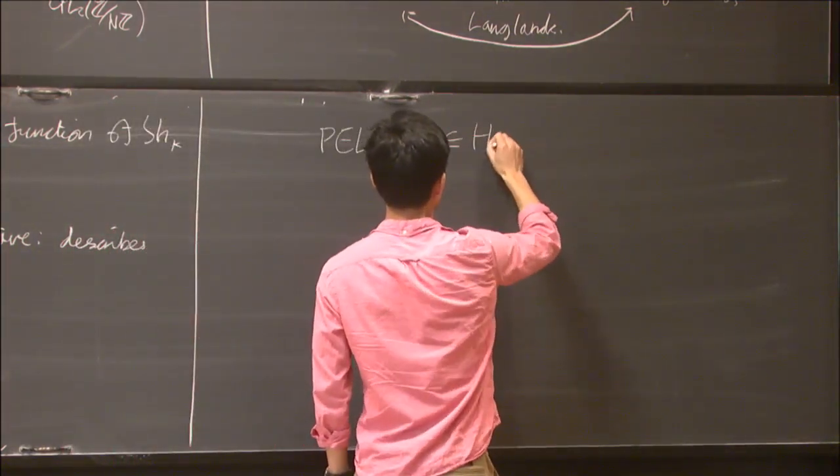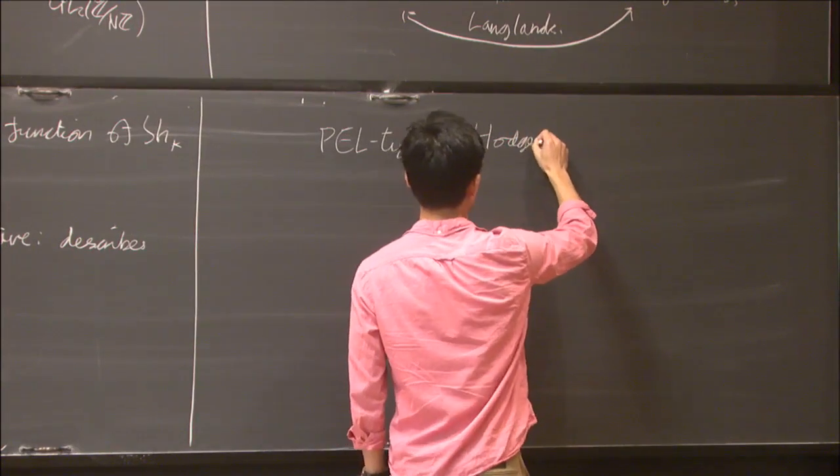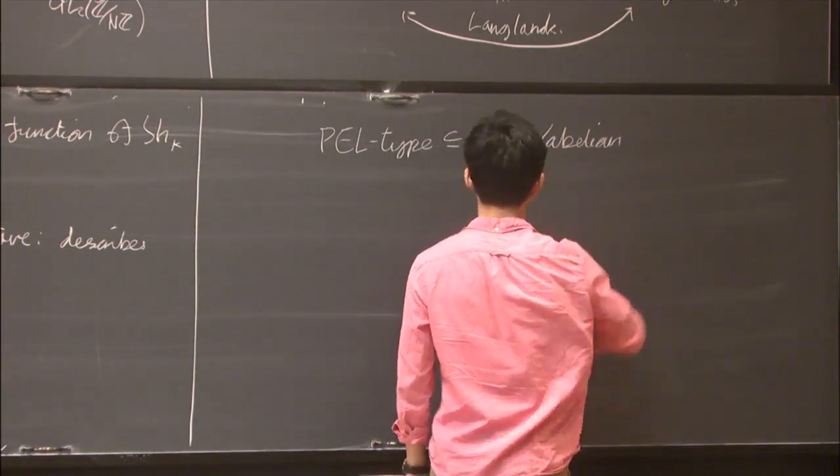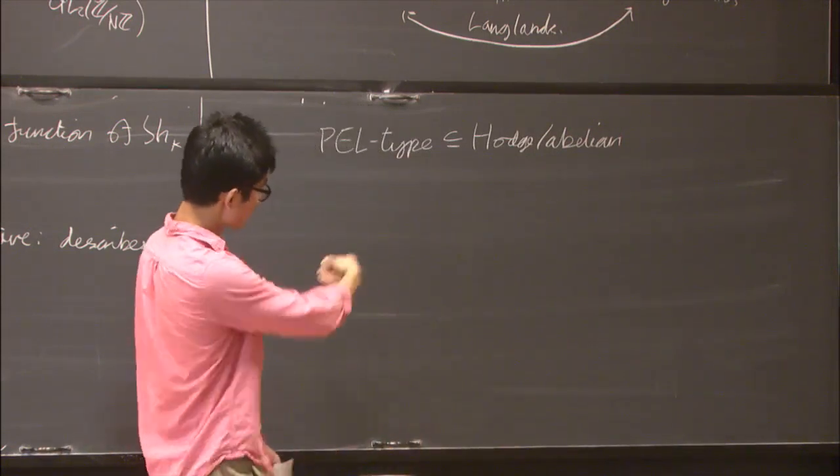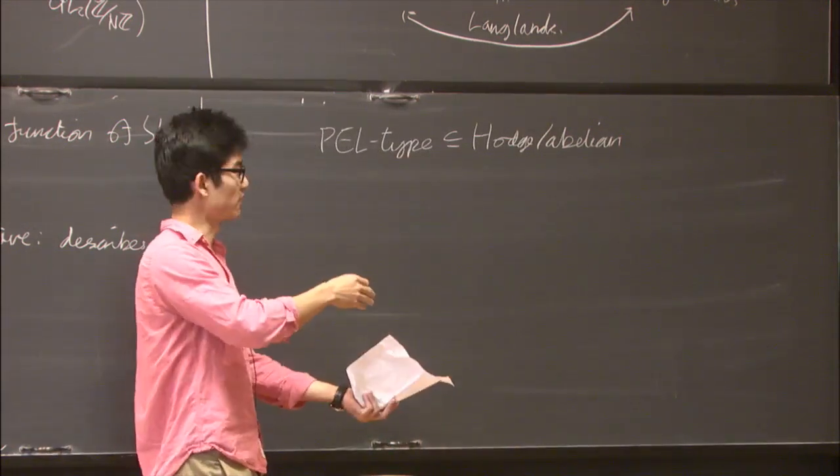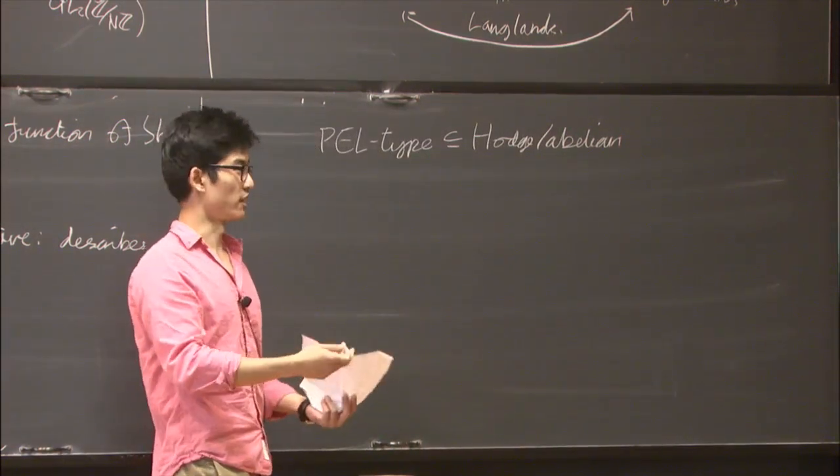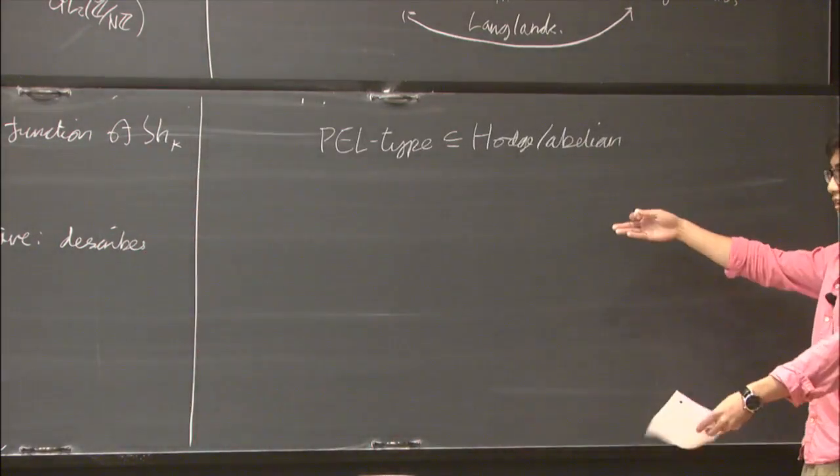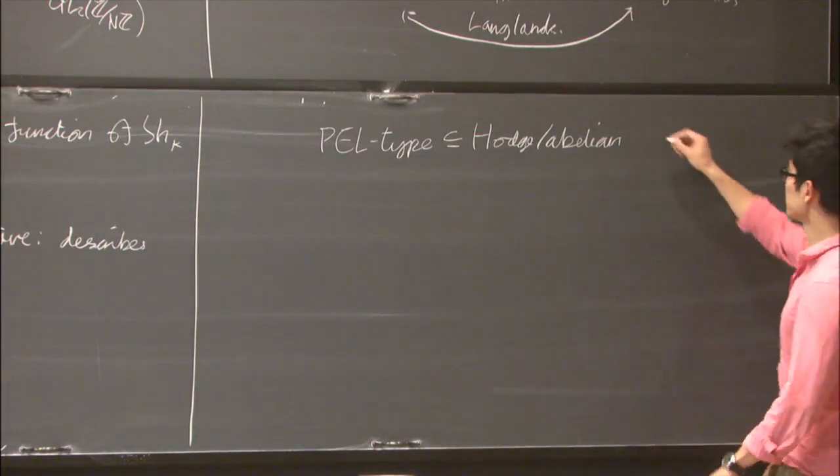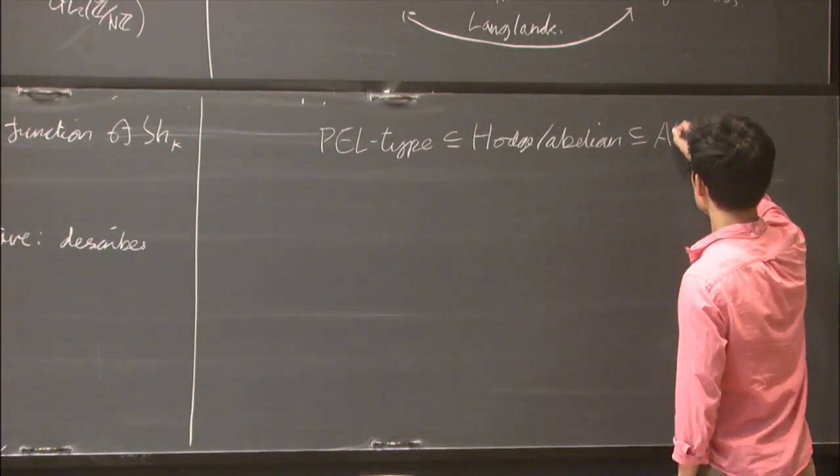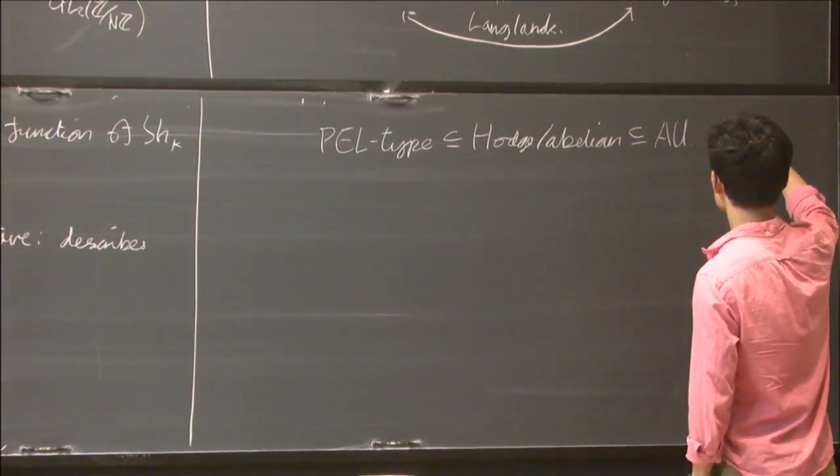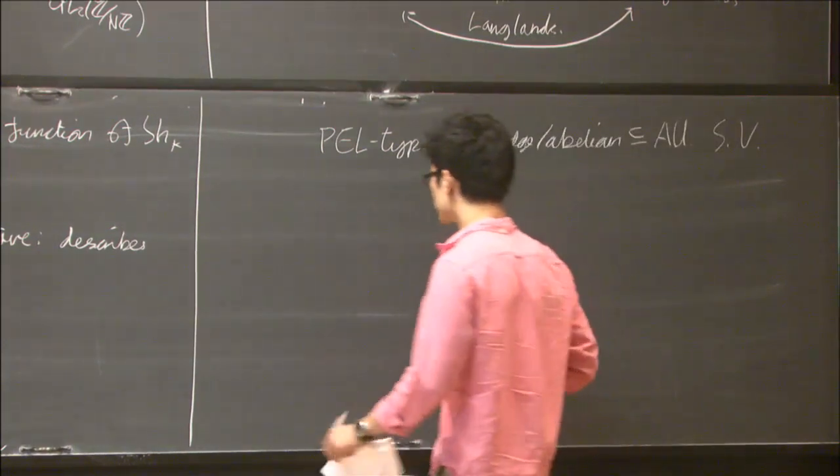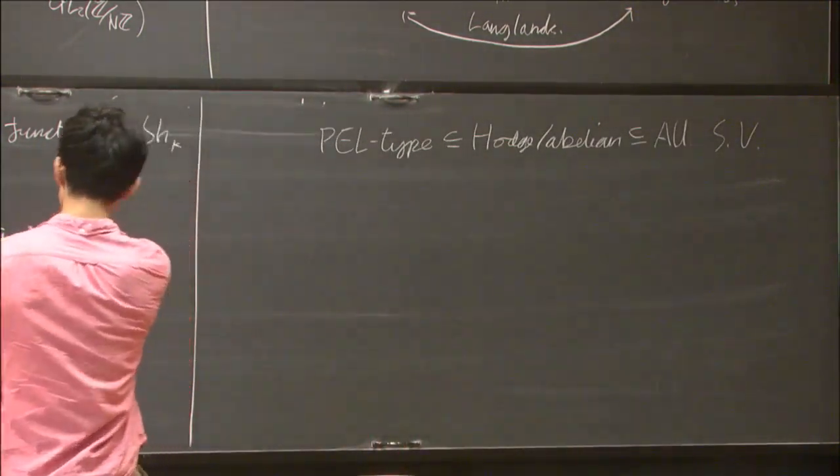Then more generally you have these Hodge slash abelian type Shimura varieties. These are still kind of related to moduli spaces of abelian varieties, but in a much more vague way. An example of something which occurs here is Shimura varieties associated to orthogonal groups. And finally you get all Shimura varieties. Here you can get exceptional groups as well.